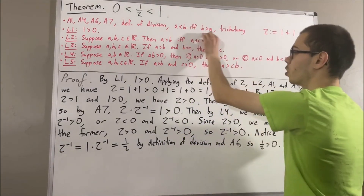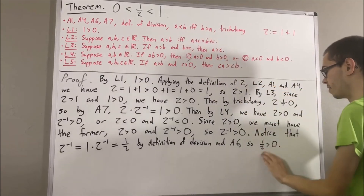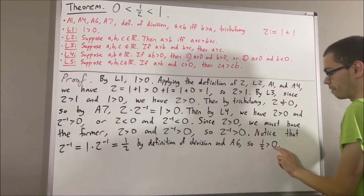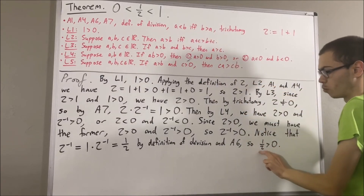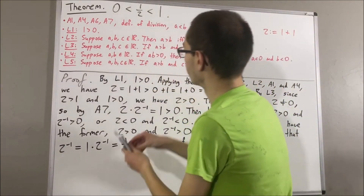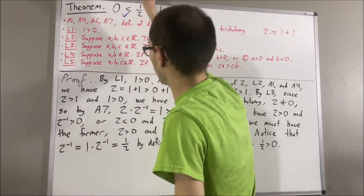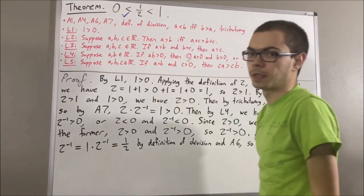According to our definition of less than, this means we have 0 is less than 1 half. So we have shown that the first inequality is true.